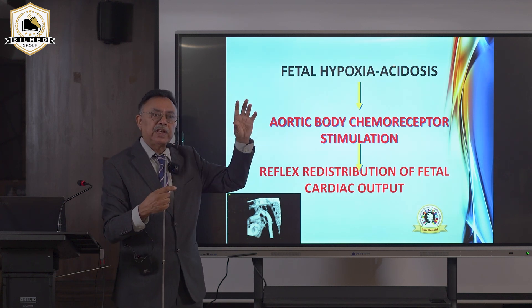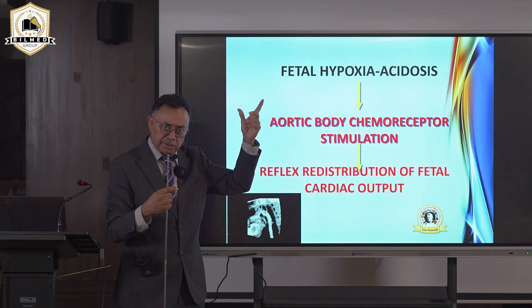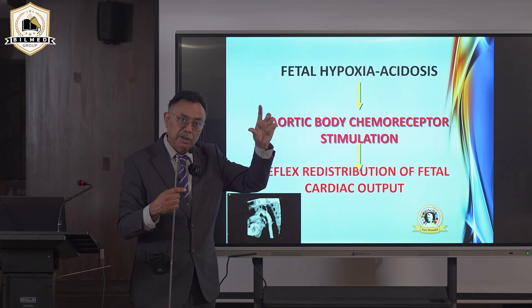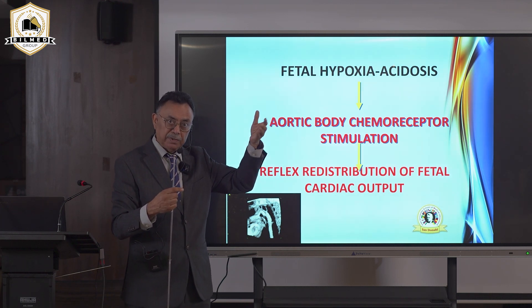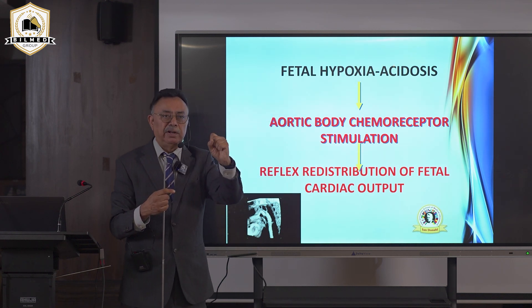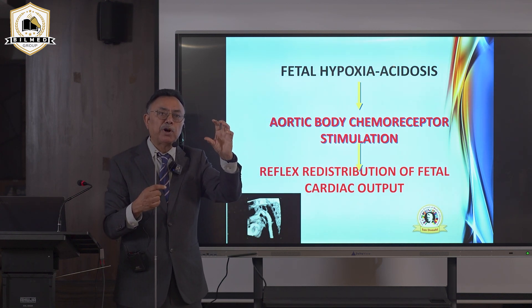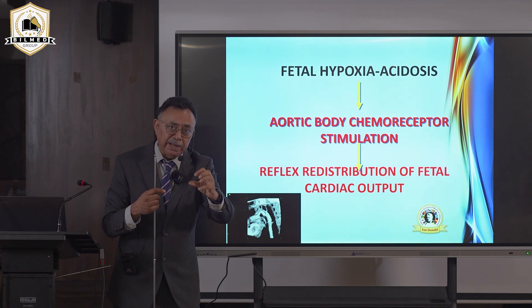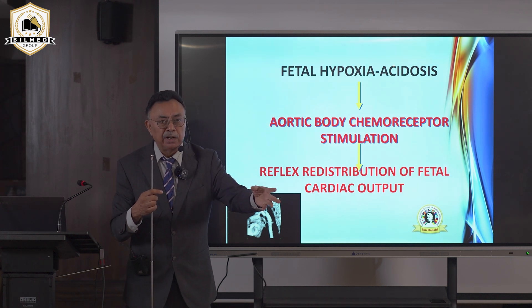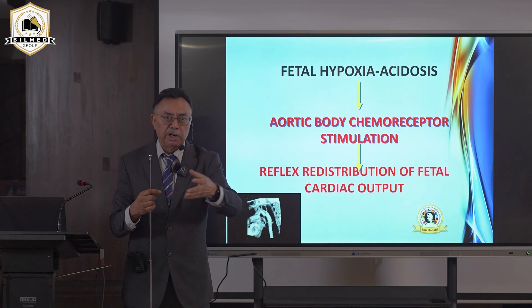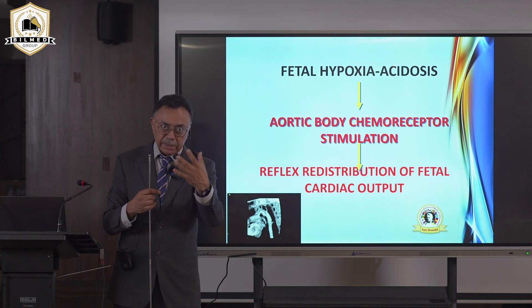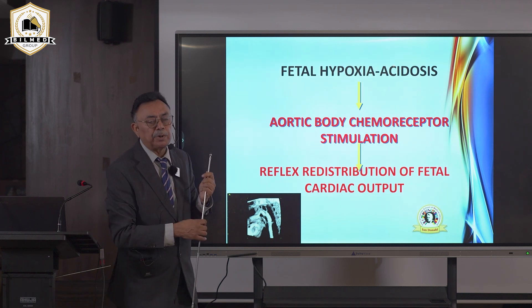The brain, adrenals, and heart are saved first — adrenals because they produce corticosteroids, and the heart because it must keep pumping. On Doppler, the cerebral vessels, which previously showed 30% diastole at RI 0.7, will now show 50% diastole — more blood going to the brain. All other vessels constrict: the aorta rises from 0.7 to 0.8-0.9, and the renal arteries also show 0.8-0.9 resistance — kidneys receive less blood, producing less urine, leading to oligohydramnios.